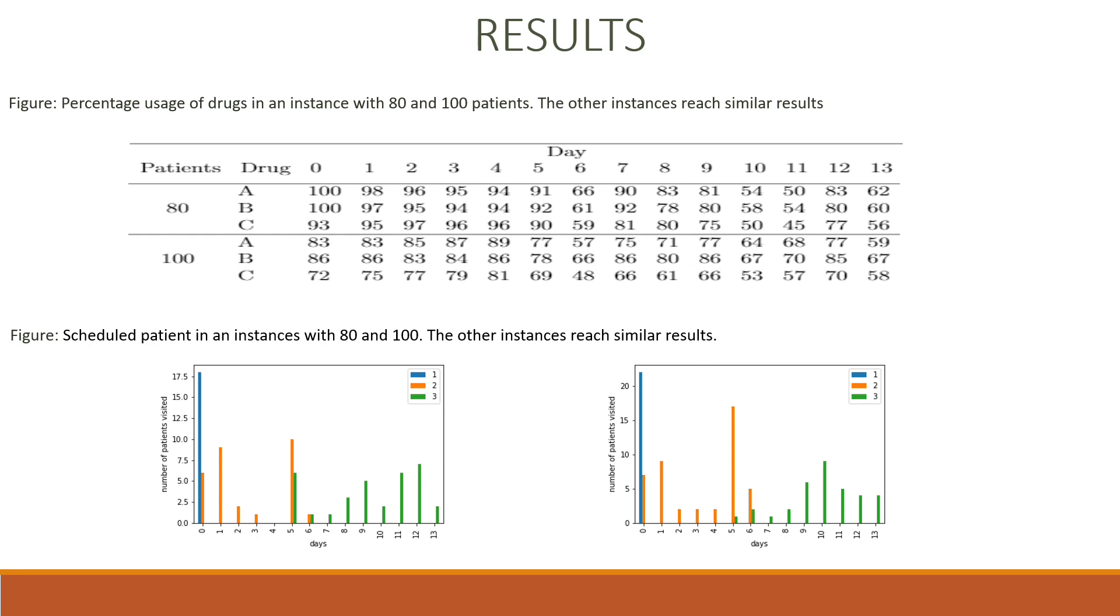In the table we summarize the average number of patients with different priorities in both scenarios. We use these instances to evaluate our solution, and these graphs are from scenario alpha with 80 and 100 patients. The first table represents the average usage of drugs for each day. We can see that we even reach a peak of 100% of usage, and the values are almost always over the 90 score. And here A, B, and C represent the different drugs that each day are used.